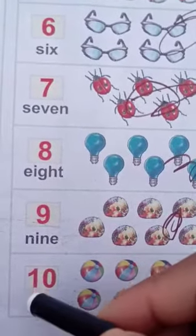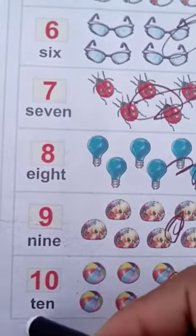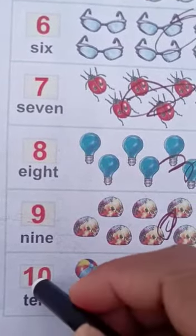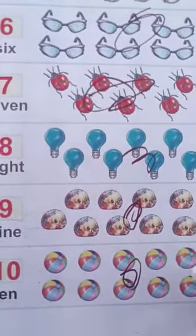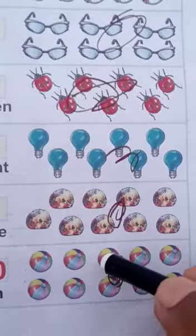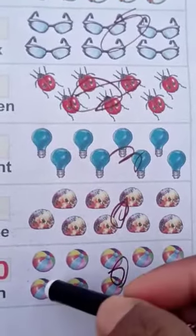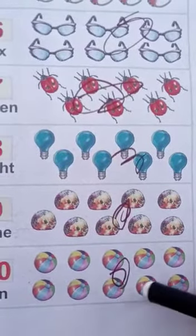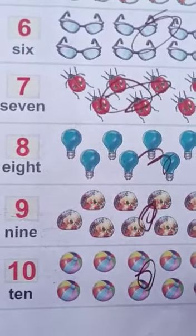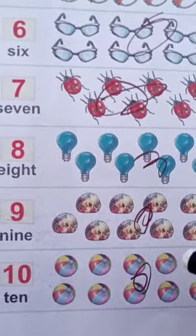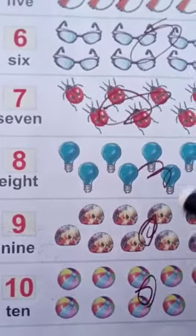Next, ten. T-E-N, ten. Here are ten balls: one, two, three, four, five, six, seven, eight, nine, ten. Here are ten balls. Okay, student? Now we will repeat it.